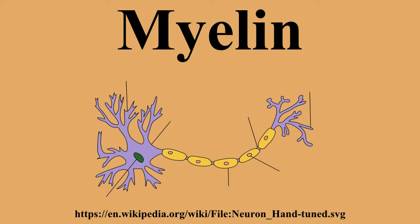Schwann cells supply the myelin for the peripheral nervous system, whereas oligodendrocytes, specifically of the interfascicular type, myelinate the axons of the central nervous system. Myelin is considered a defining characteristic of the vertebrates, but myelin-like sheaths have also been seen in some invertebrates, although they are quite different from vertebrate myelin at the molecular level.